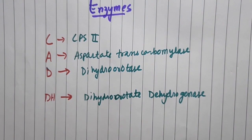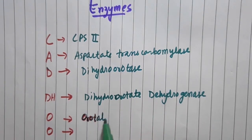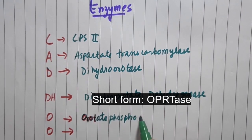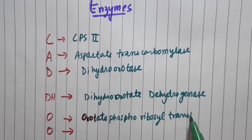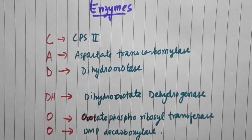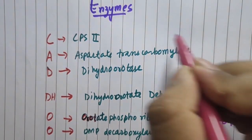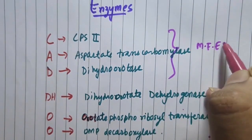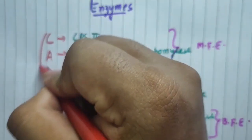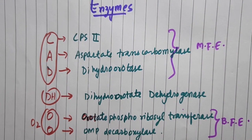The other two enzymes are O and O — that is orotate phosphoribosyl transferase and OMP decarboxylase. These last two enzymes are together called bifunctional enzymes. So you can remember them as CAD, DH, and O2. This covers all the enzymes taking part in Pyrimidine Nucleotide Synthesis.